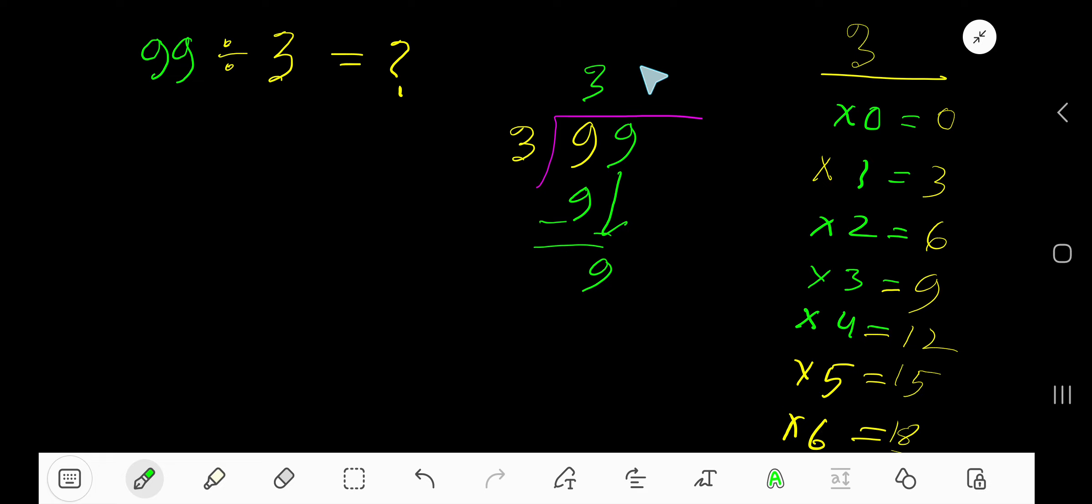3 goes into 9 again, 3 times. So 3 times 3 is 9. Subtract to get 0. As our remainder is 0, we are done. 33 is our answer.